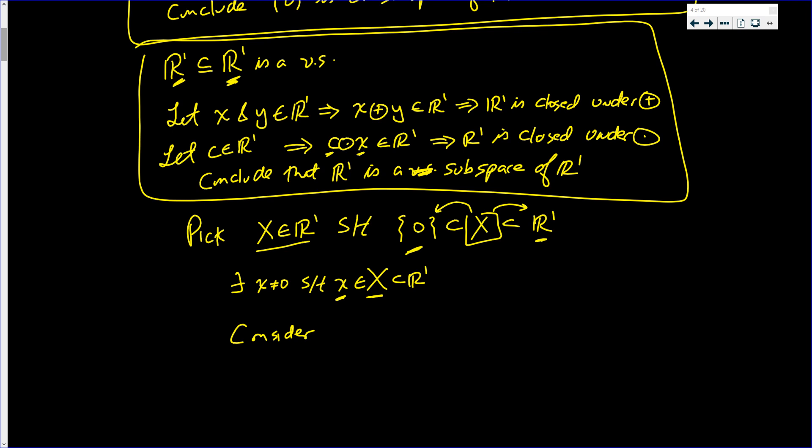So now consider 1 over X circle dot with X. This is the scalar. It's a real number. That means it's in R. This is in R. So their circle dot is in R.